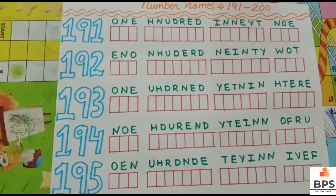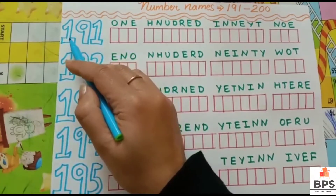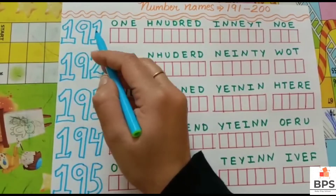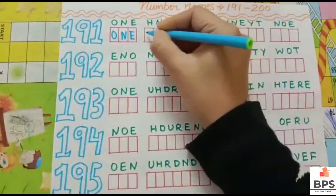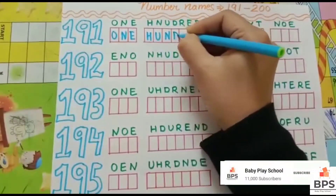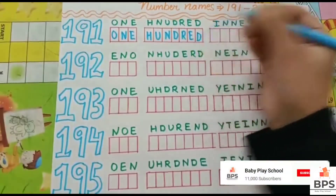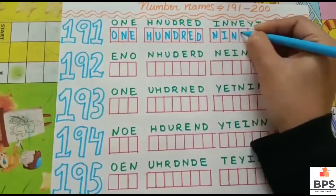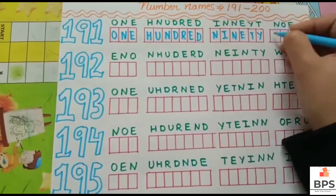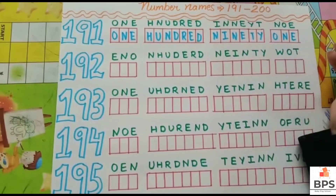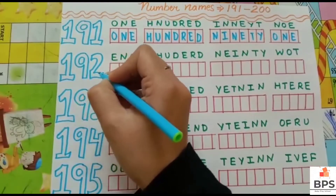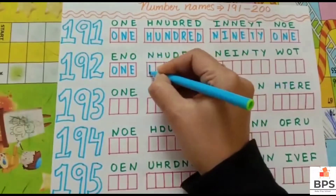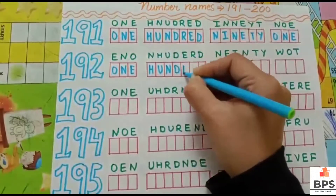Today we will learn number names from 191 to 200. Let's start with 191. Let's start writing the spelling: O-N-E, 1, H-U-N-D-R-E-D, 100, N-I-N-E...